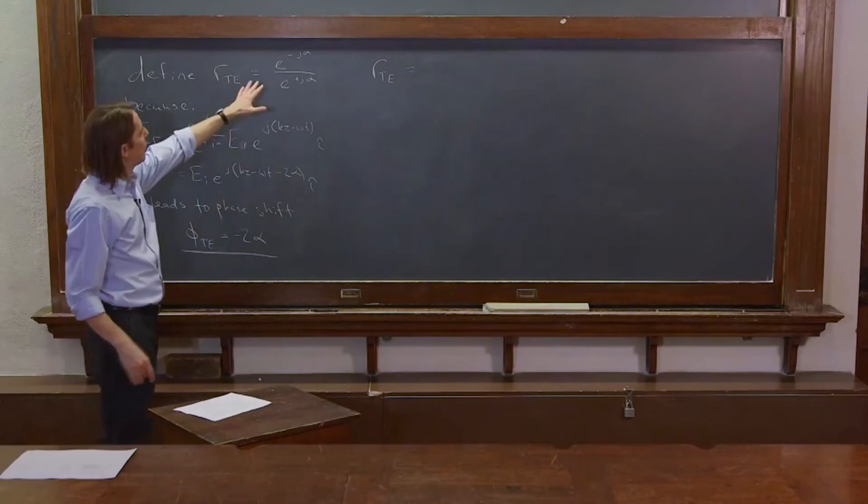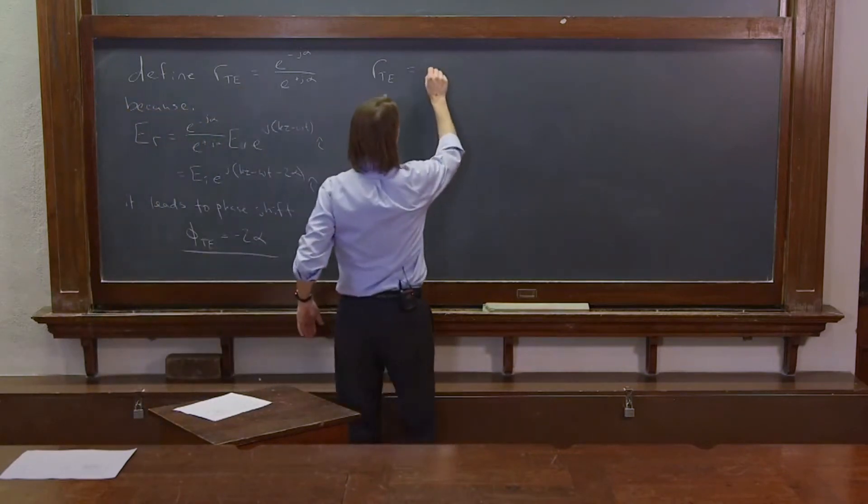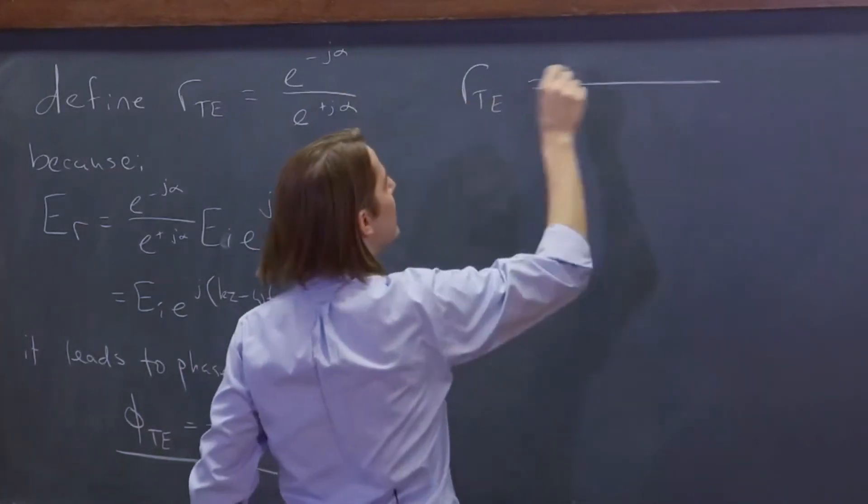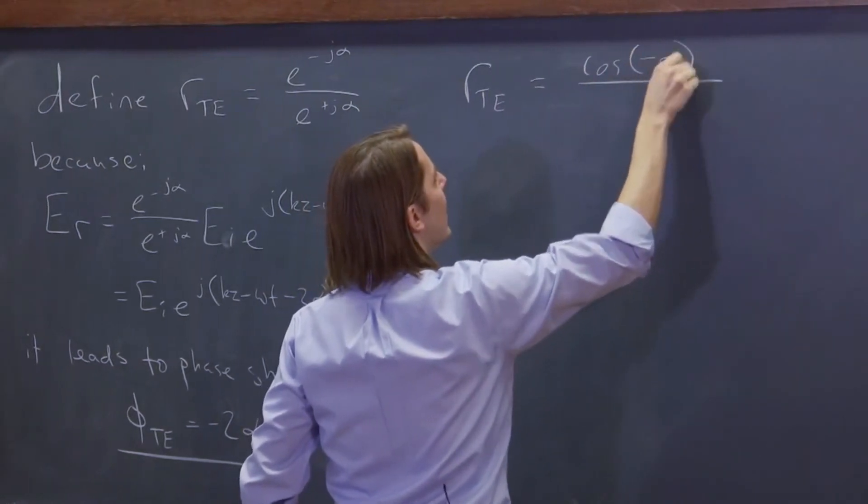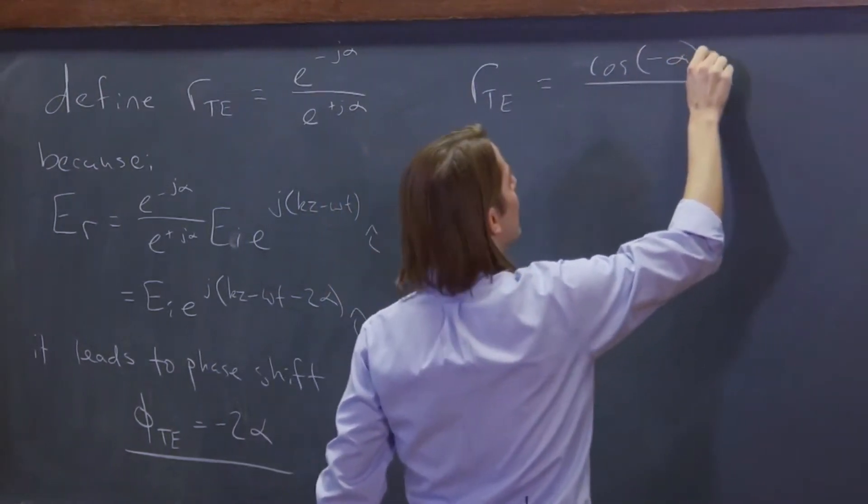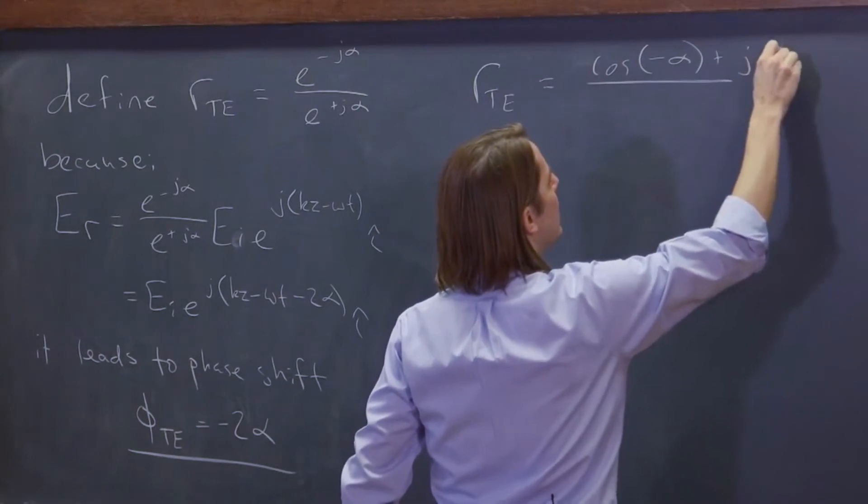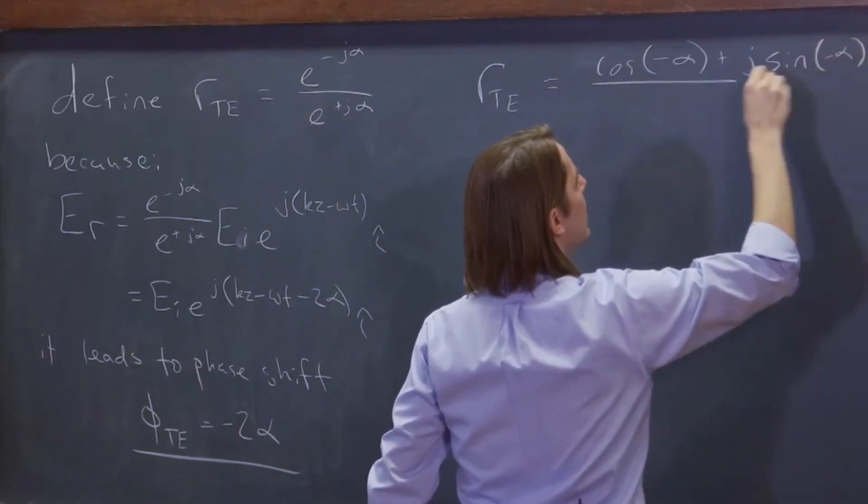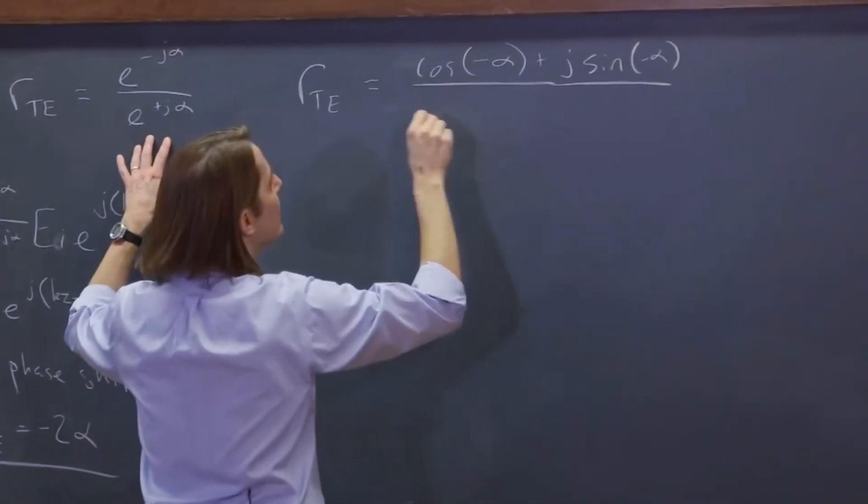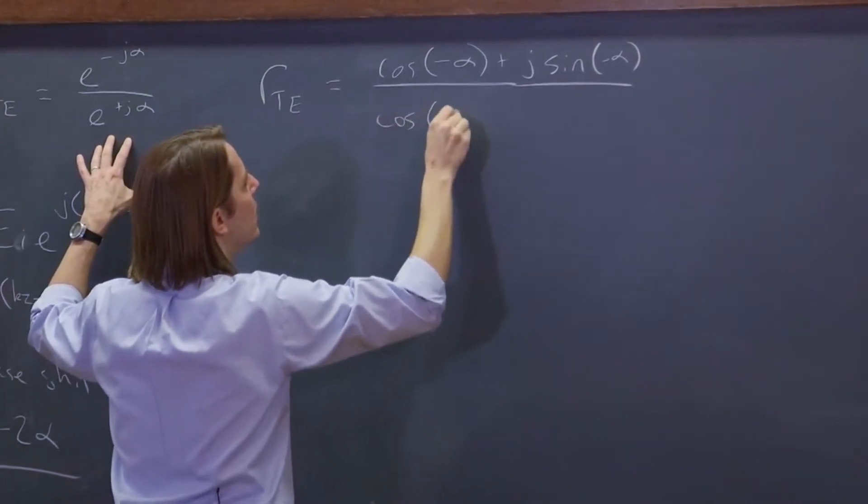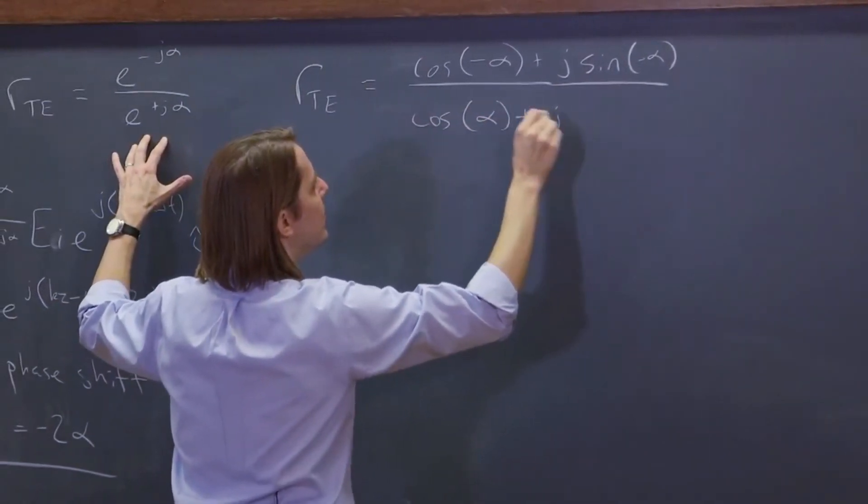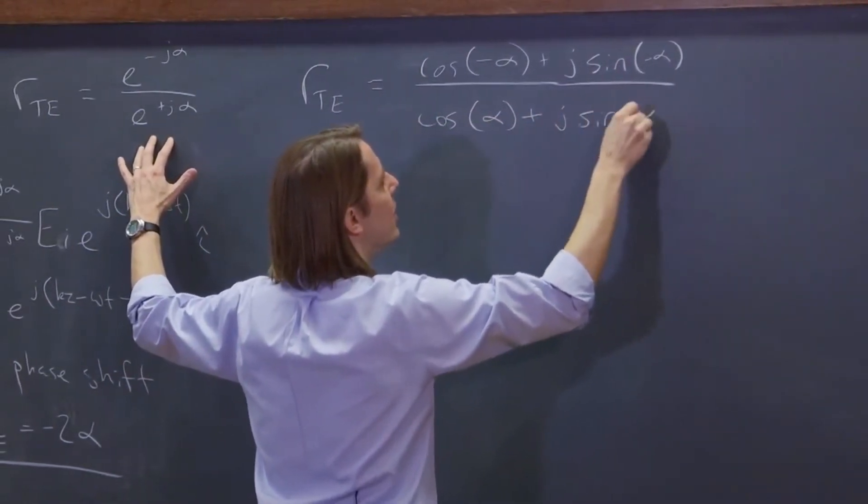So what you'd probably apply is Euler, and you'd say that's equal to the cosine of minus alpha plus j times the sine of minus alpha. And this is equal to the cosine of alpha plus j times the sine of alpha.